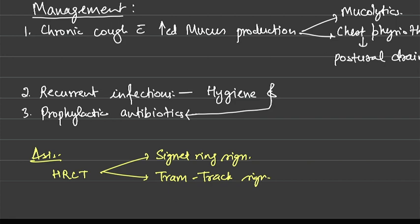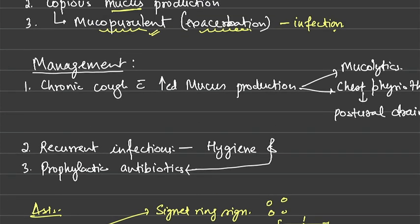The tram track sign represents visualization of dilated bronchioles appearing like rail tracks on HRCT. When this tram track is seen in cross-section, it appears as a signet ring. These are the two important HRCT signs to remember for bronchiectasis.